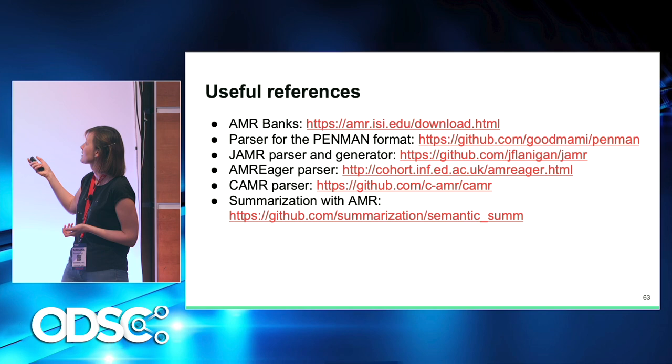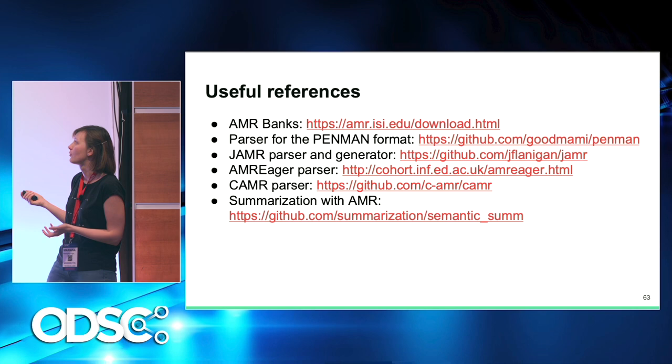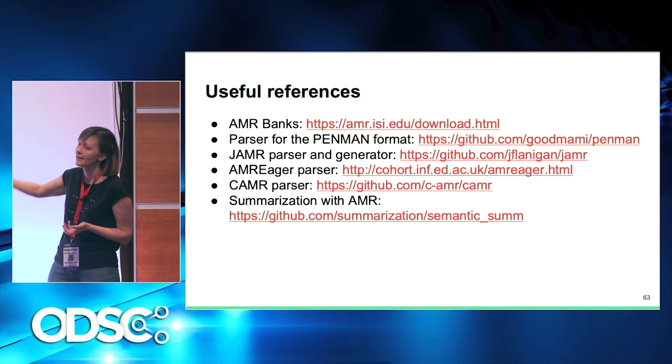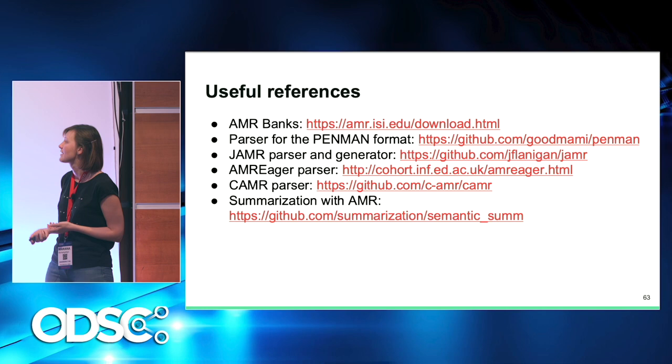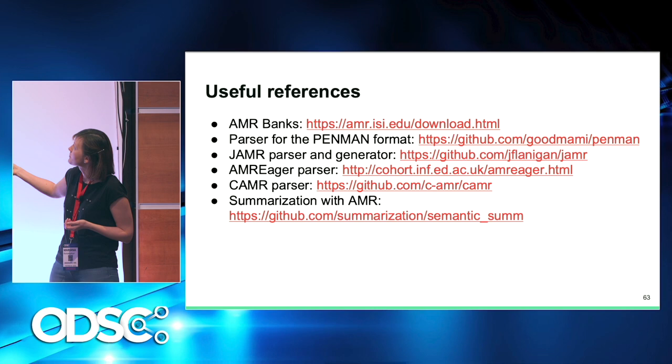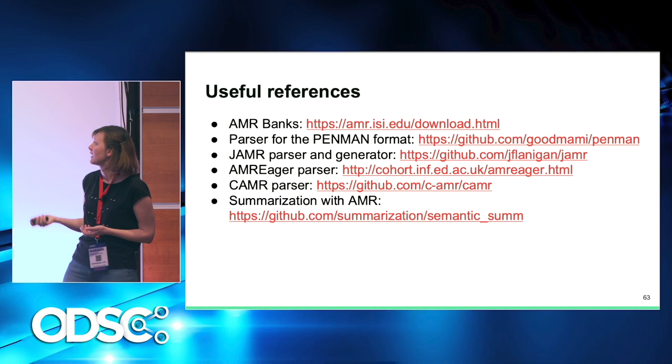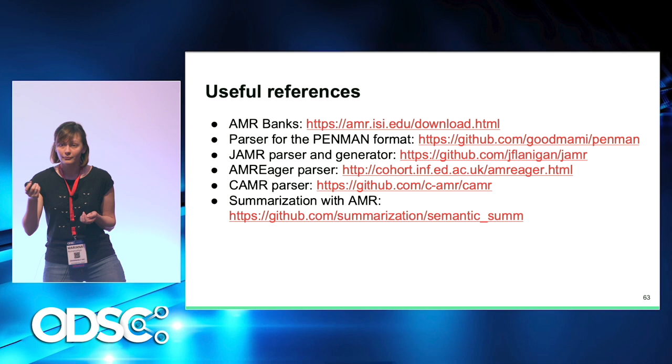I've added some useful references — papers I was mentioning along the way. Even more important are the useful resources: links to AMR banks where you can find all corpora with raw sentences and AMR representations; a Python parser for Penman format; the open source parsers JAMR and CAMR (graph-based and transition-based); and a good tutorial on summarization with AMR. Thank you very much for your attention.